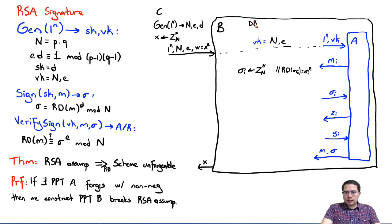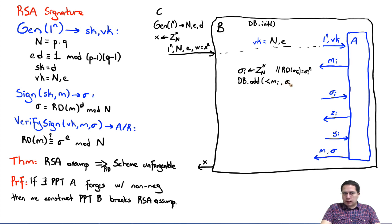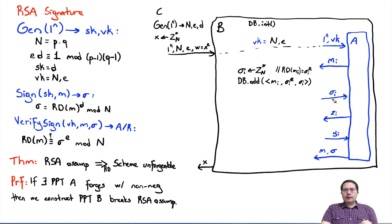So what we need to do is initialize an empty database. We remember in the database that if a query M_i is made, the corresponding random oracle output would be Sigma_i^E and the corresponding signature would be Sigma_i. We store these and then send Sigma_i back.